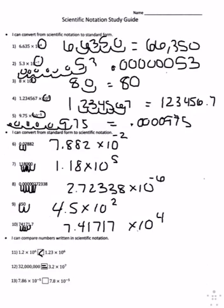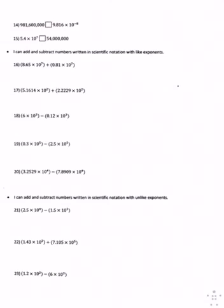Number thirteen: 7.86 times 10 to the negative fifth and 7.8 times 10 to the negative fifth — 7.86 is greater. Number fourteen, 981,600,000 is greater than 9.816 times 10 to the negative eighth. Number fifteen, 5.4 times 10 to the 7th is equal to 54 million.